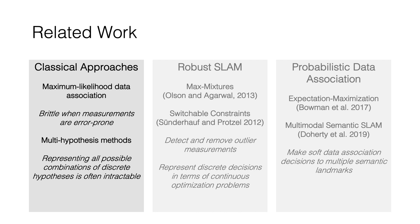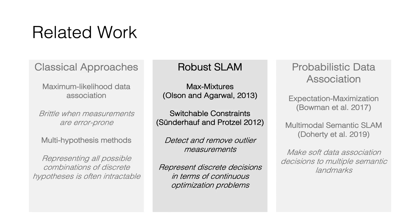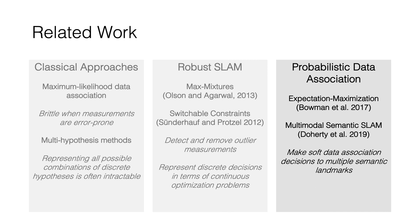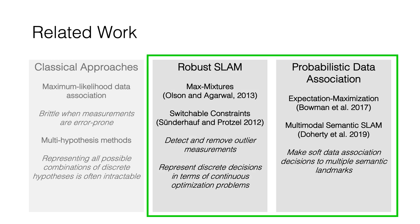The most common approach to this problem is maximum likelihood data association, which simply selects the most probable hypothesis at each point in time and discards any others. This approach can be brittle when there is significant measurement noise or false positives, as we often encounter when using object detections. Multi-hypothesis methods seek to represent combinations of discrete hypotheses, but often this representation becomes computationally intractable. On the other hand, there's substantial prior work in robust SLAM, including works like max mixtures and switchable constraints, which have historically been successful at rejection of outlier measurements. In the context of semantic SLAM, probabilistic data association methods that flexibly make soft data association decisions have shown some recent success. Our work builds on ideas from both of these areas and aims to bridge the gap between prior work on robust SLAM and recent work on semantic SLAM, in order to improve the resilience of a semantic navigation system to uncertainty due to detection errors as well as geometric ambiguity.